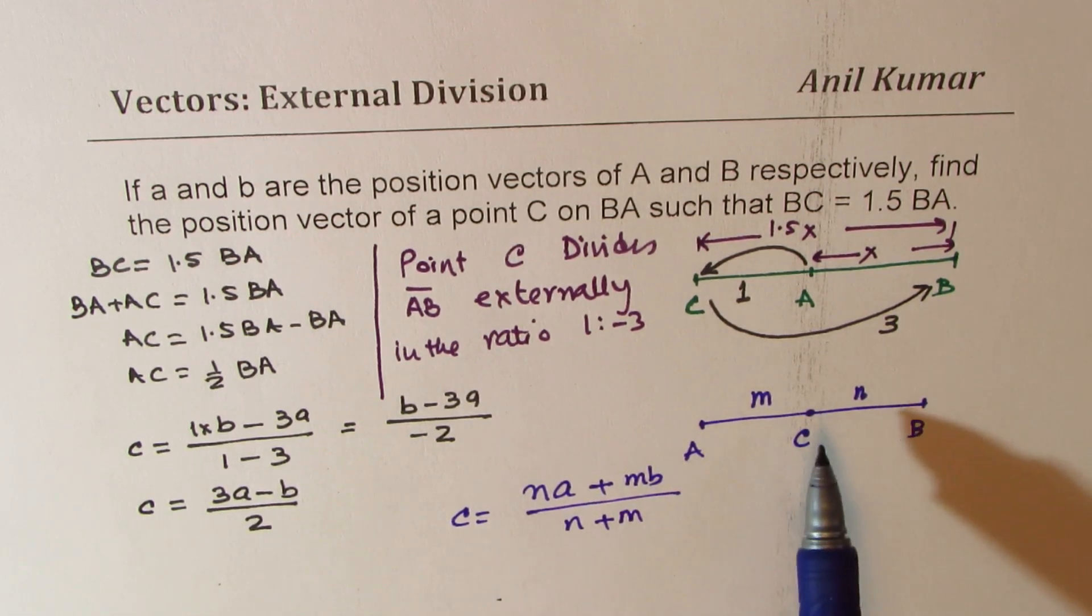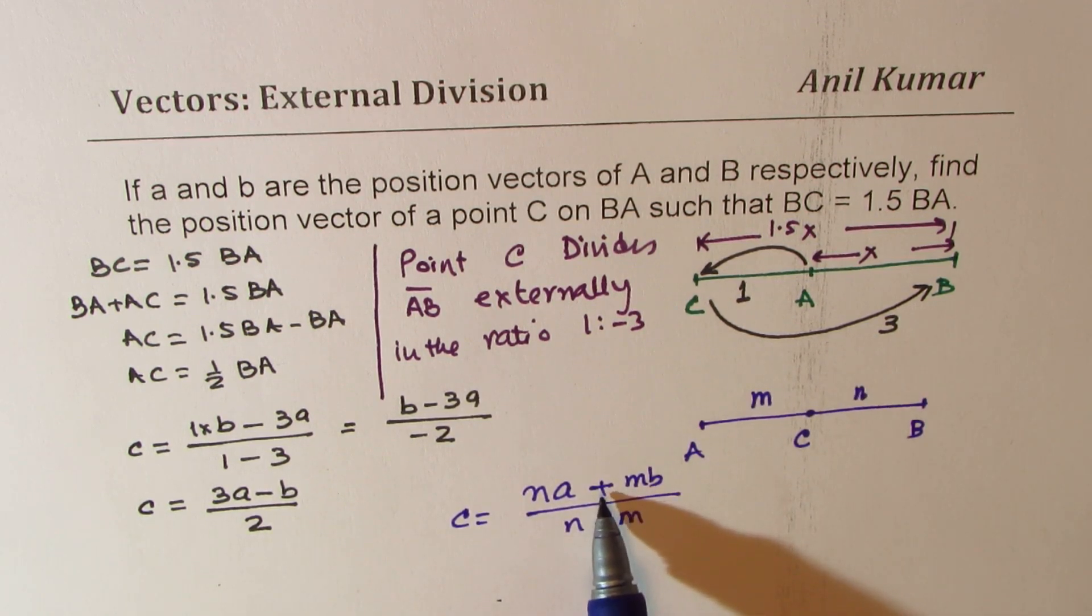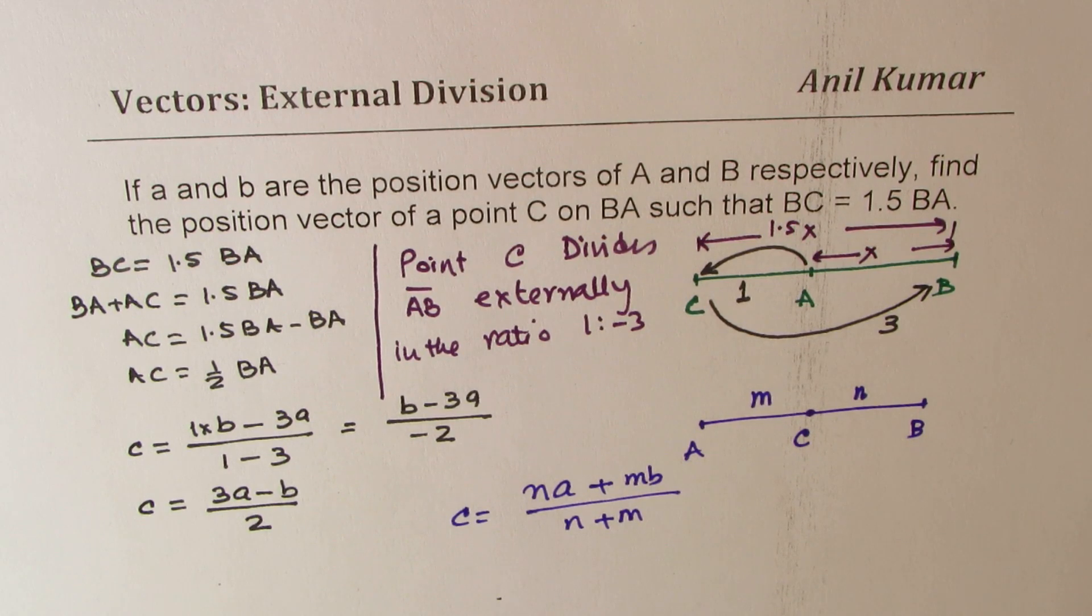Okay, so it's the same formula. Since C is an external point, instead of this positive sign, we have negative 3 in our case. So that is how we could actually solve this particular question.